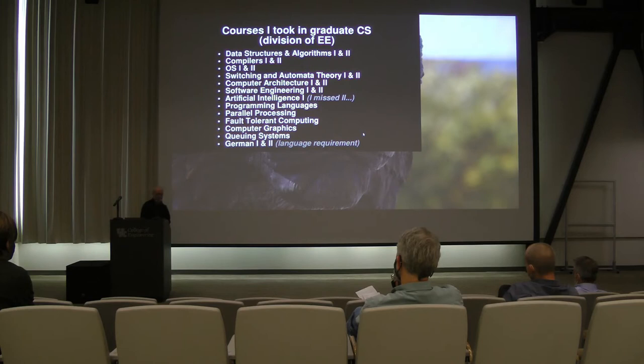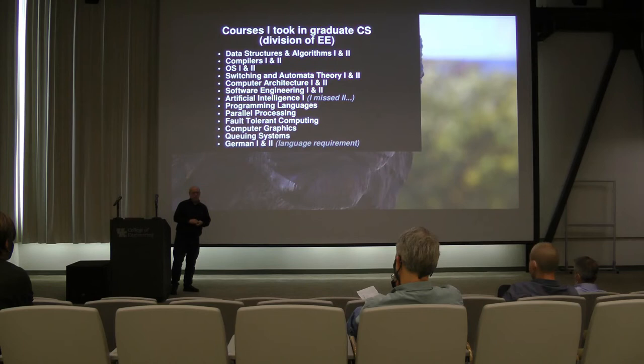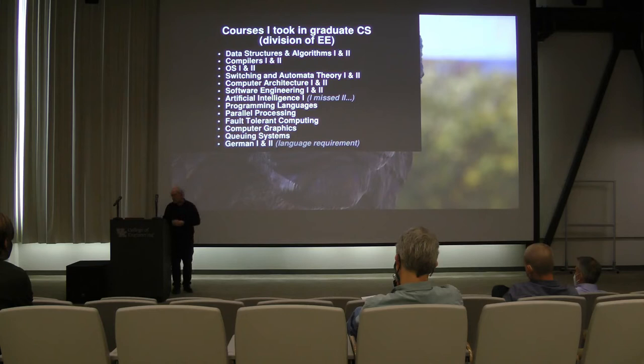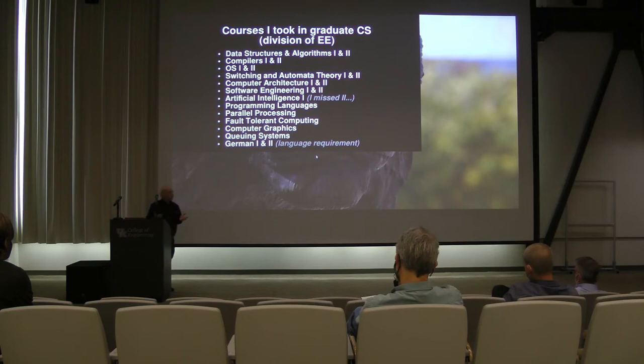Parallel processing was just getting started, and everyone expected that by now — actually by 20 years ago — we figured everyone was going to be learning to write parallel programs in their first programming class. That's never happened, which is kind of disturbing. What's even more disturbing is that parallel processing is now the way that you get speedup on modern computers, so it's weird that we don't have people explicitly learning parallel programming. Fault-tolerant computing was a big thing, computer graphics, queuing systems, and more theory. And I had to take German 1 and 2, because they required you to translate a technical passage written in a different language to qualify for the PhD.